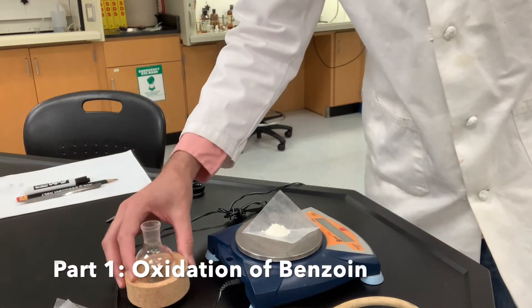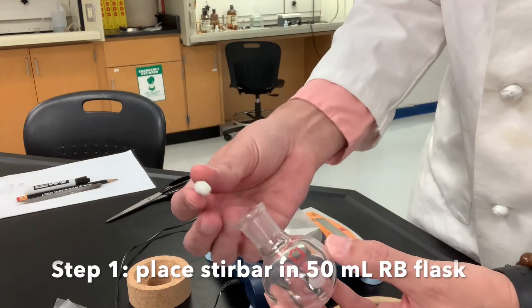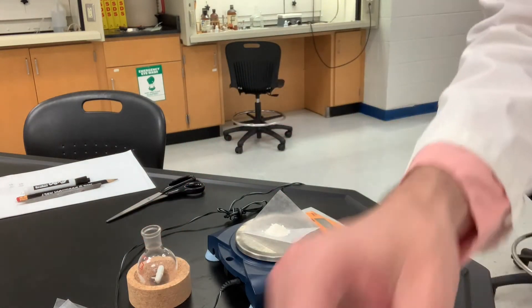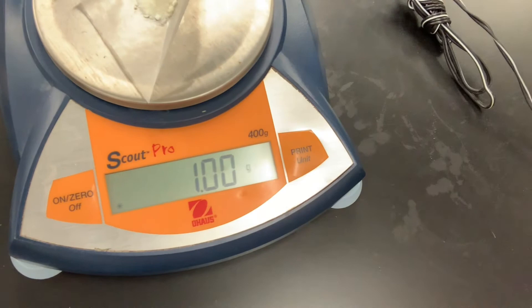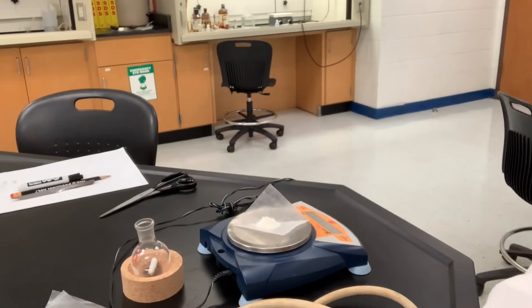Okay, we've got a round bottom flask here, 50 milliliters, and we'll use a magnetic stir bar. And I've weighed out one gram of benzoin. That's our mass of benzoin, and you can see how it's a kind of an off-white powder there.